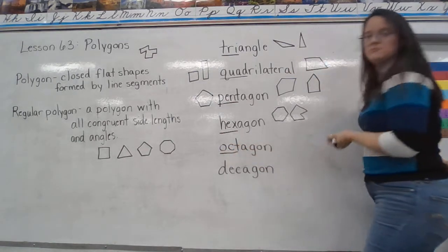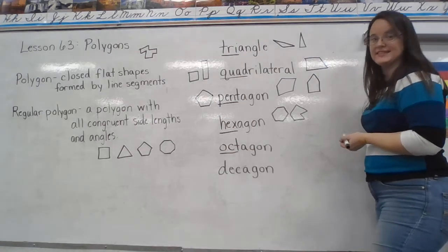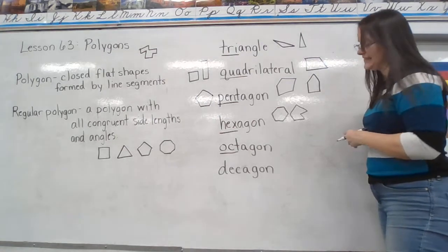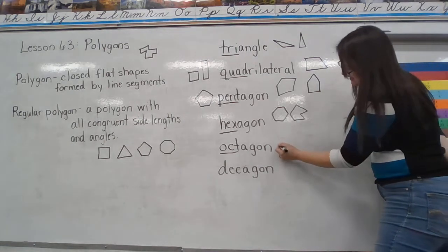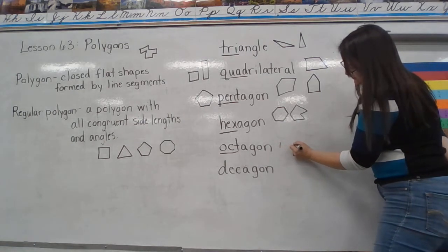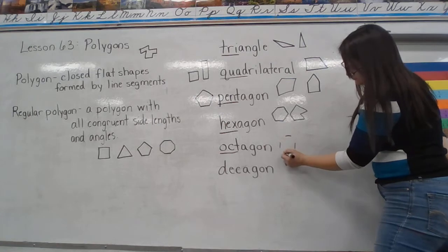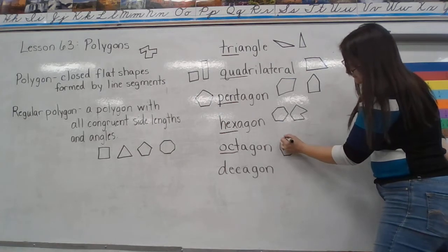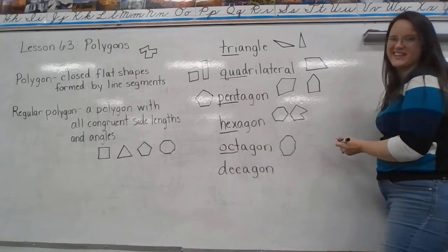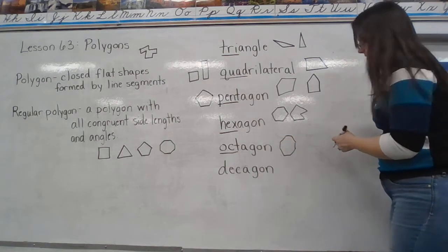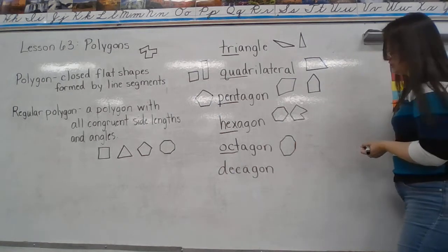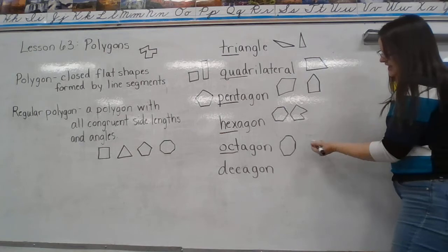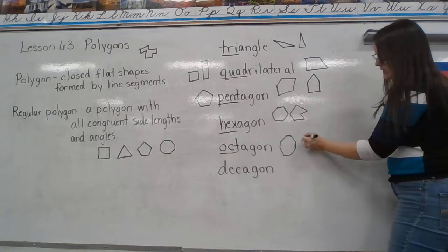Oct means eight, like octopus has eight legs. So an octagon has eight sides. This is how I usually draw octagons — I start with four sides and then connect them. Regular octagon or any eight-sided shape — that is an octagon.